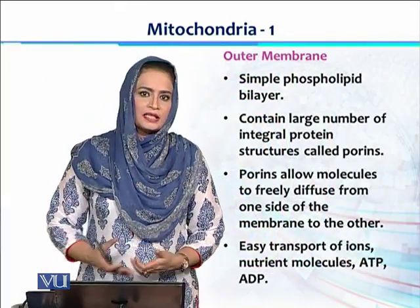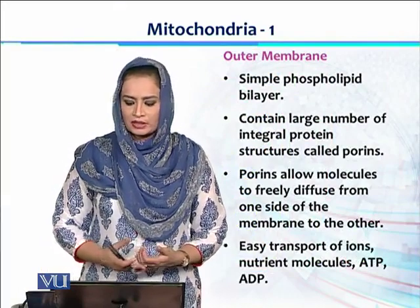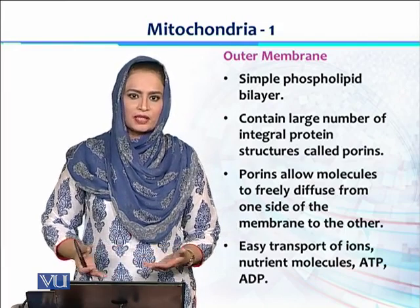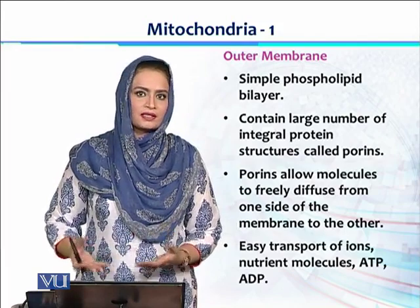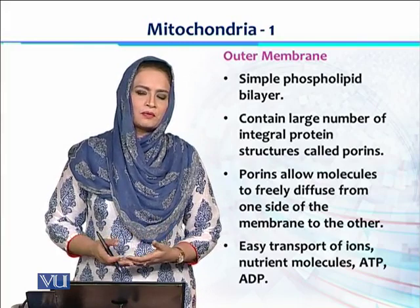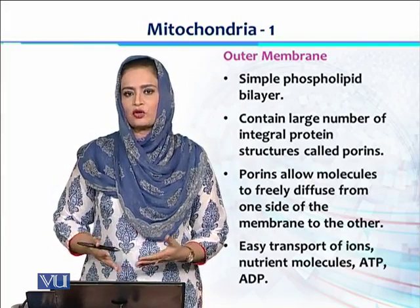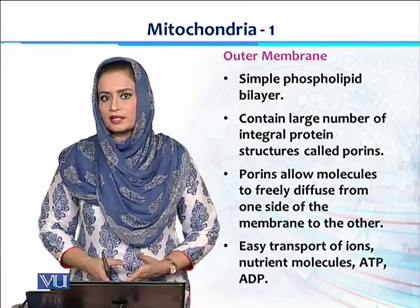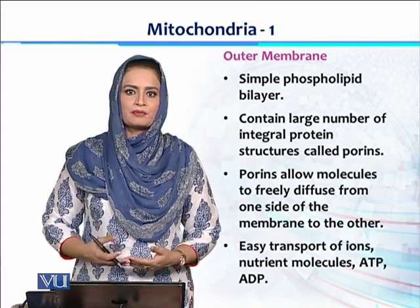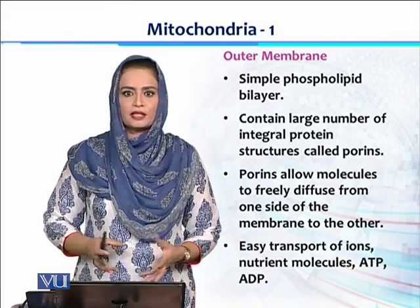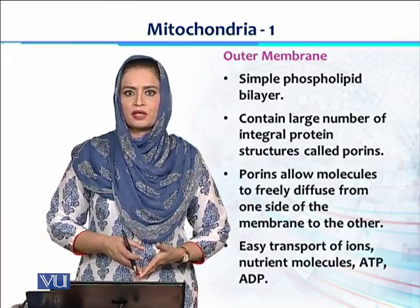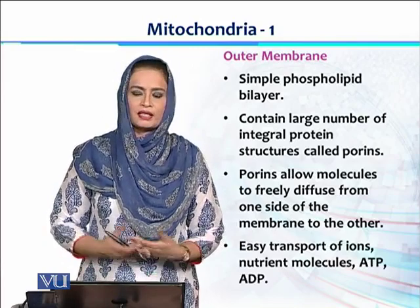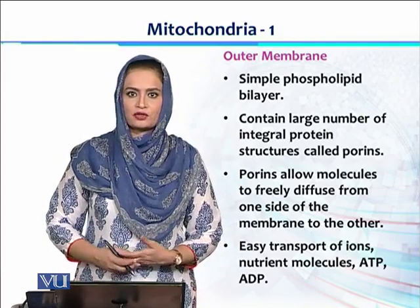The outermost component is the outer membrane. It is similar to a plasma membrane and contains a phospholipid bilayer. However, the mitochondrial outer membrane contains a special type of protein called porins, which are present in abundance. Due to these porins, the membrane becomes highly permeable, so there is no check and balance on transport across it. Ions, nutrients, molecules, ATPs, and ADPs can easily be exchanged through this outer membrane.